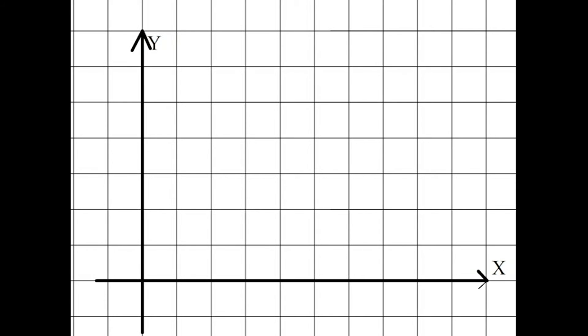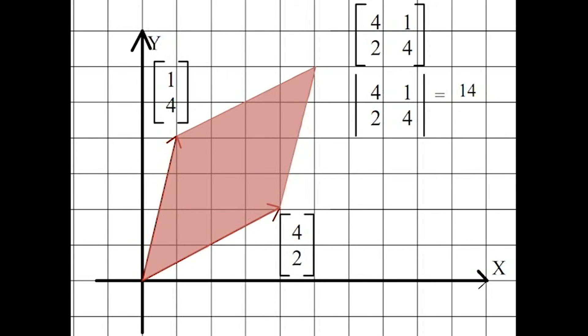Now before we move on to Cramer's rule, let me show you what determinants represent. Suppose you have two vectors, 1-4 and 4-2. Now put them together to form a matrix. Then you compute its determinant, which in this case turns out to be 14. What this represents is the area of this parallelogram.